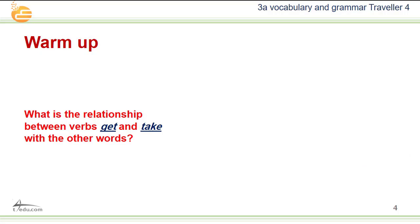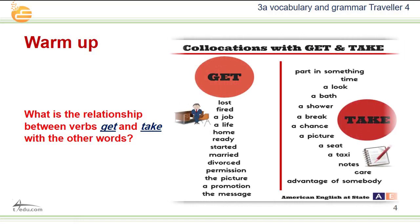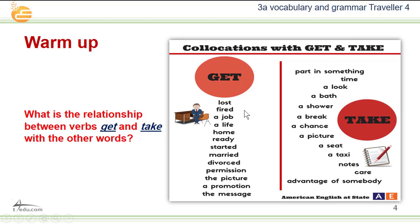What is the relationship between verbs get and take with other verbs? Collocations with 'get': get lost, get fired, get a job, get a life, get home, get ready, get started, get married, get divorced, get permission, get the picture, get a promotion, get the message.